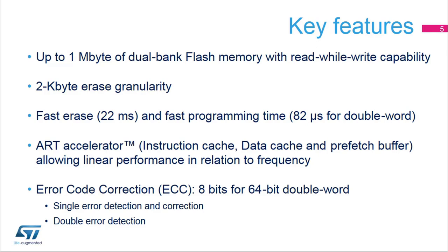The adaptive real-time memory accelerator with an instruction cache, a data cache, and a prefetch buffer allows a linear performance in relation to frequency. The flash memory supports error code correction, or ECC, which is 8 bits long for each 64-bit double word. A single error is detected and corrected. A double error is detected but not corrected.